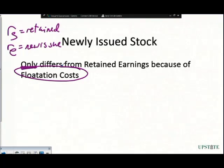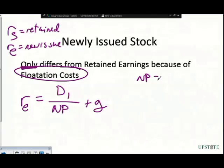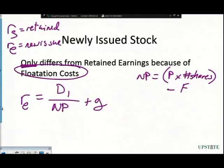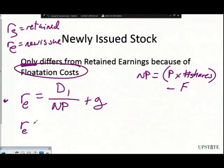Newly issued stock is slightly more expensive than our retained earnings, but it's not dramatically, just due to the flotation costs. But it's not something that we can do all the time. So we want to save this for when we need a big splash. When we use our method, our newly issued stock, the return on equity, it's going to be our dividend in year one divided by the net proceeds plus our growth rate. And that net proceeds here, we can think of as essentially being our price multiplied by the number of shares minus our flotation cost, minus our total amount that we're paying to get this thing out there.